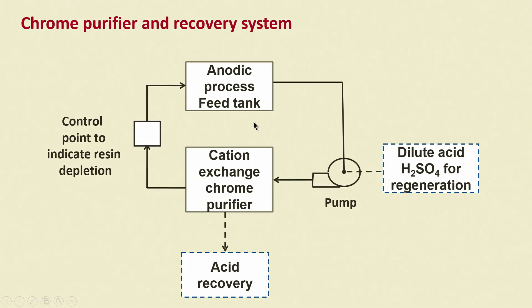We were discussing chromium removal from electroplating effluents. In previous slides, schematic diagrams were shown for chromium removal including anodic process, cation exchange process, chrome purifier, and others. These are different schematic diagrams which can handle different quantities of chromium generated from a variety of operations.